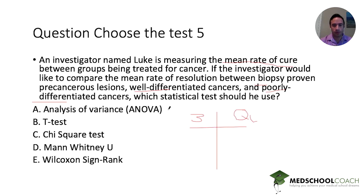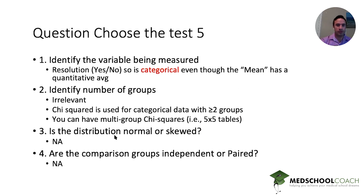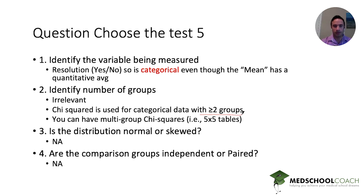ANOVA requires greater than or equal to three groups but with quantitative data. T-test: two groups, quantitative. Chi-squared: greater than or equal to two groups with qualitative data — that fits. Mann-Whitney and Wilcoxon: two groups, quantitative. So the answer is chi-squared. The key point here is that with the chi-squared test, you can use it for more than two groups. A common misconception is that if you have more than two groups you need ANOVA — but if the data is categorical, you can use chi-squared.